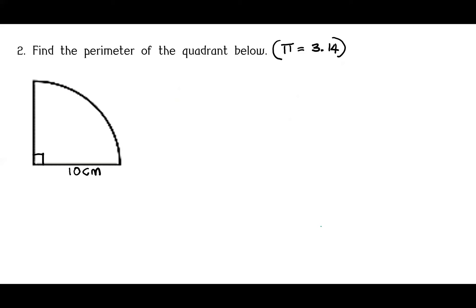To get the perimeter of this quadrant, we first need to get the length of this arc. A quadrant is a quarter of a circle. A whole circle is 360 degrees, and a quadrant has its center angle as 90 degrees. So 90 out of 360 gives a quarter. This arc length will be a quarter of the circumference of a whole circle.